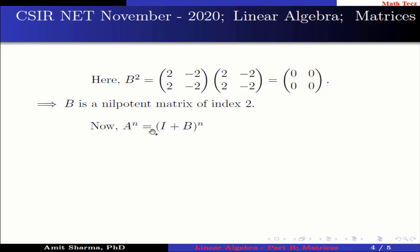Now A to the power n is equal to (I + B) to the power n, which can be further written as I plus nC1 times B, which is equal to I plus nB. Which implies A raised to the power n is equal to identity matrix plus n times the matrix having the element 2, -2, 2, -2. Which implies A raised to the power n is the matrix having the element 2n+1, -2n, 2n, -2n+1.